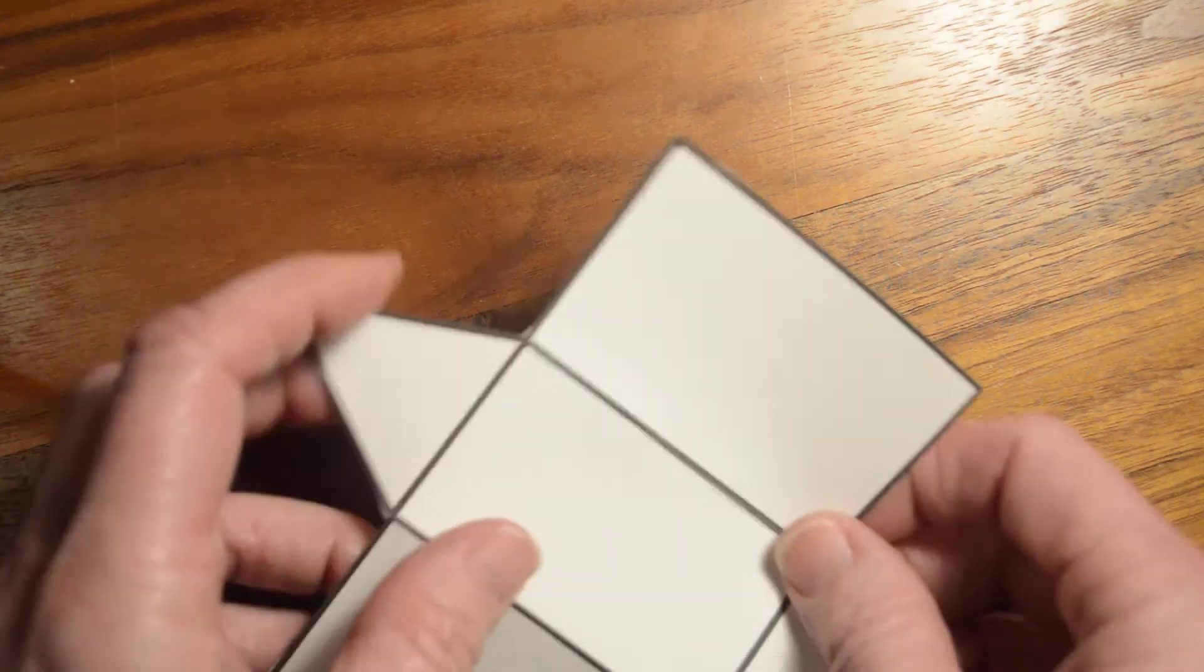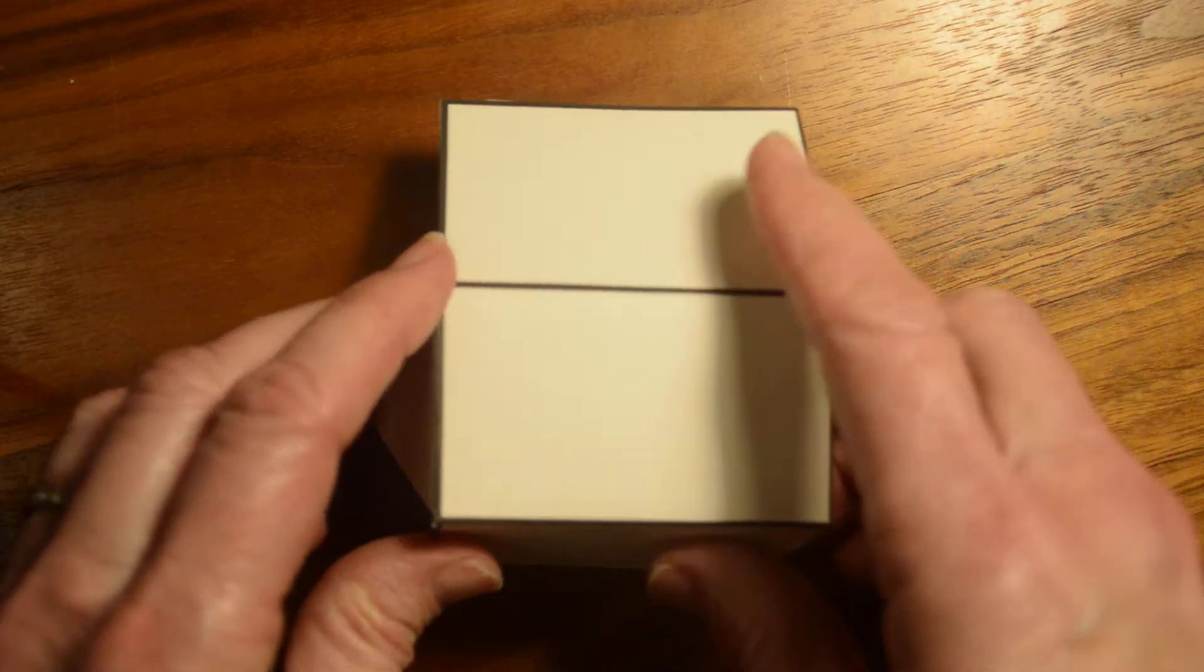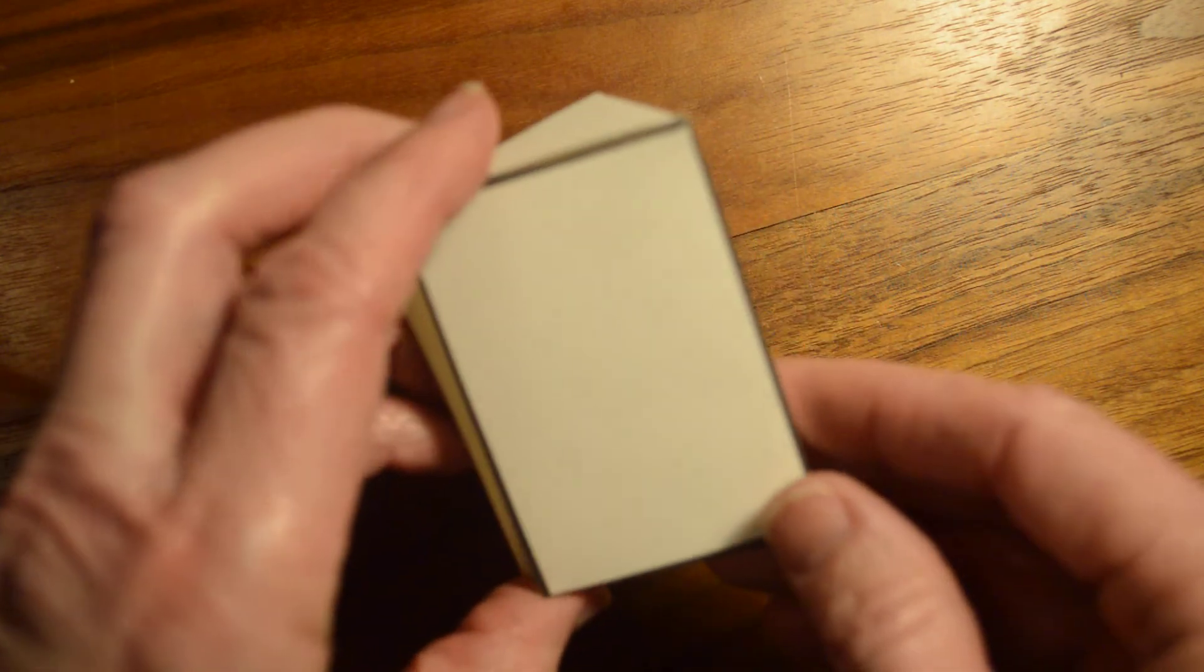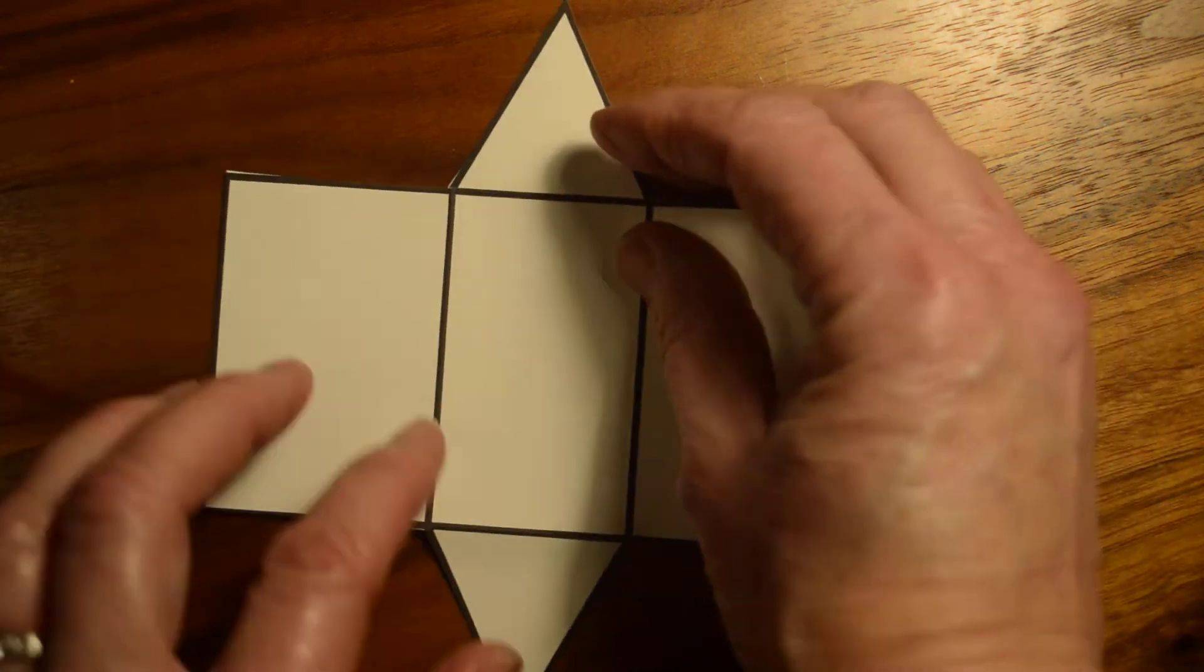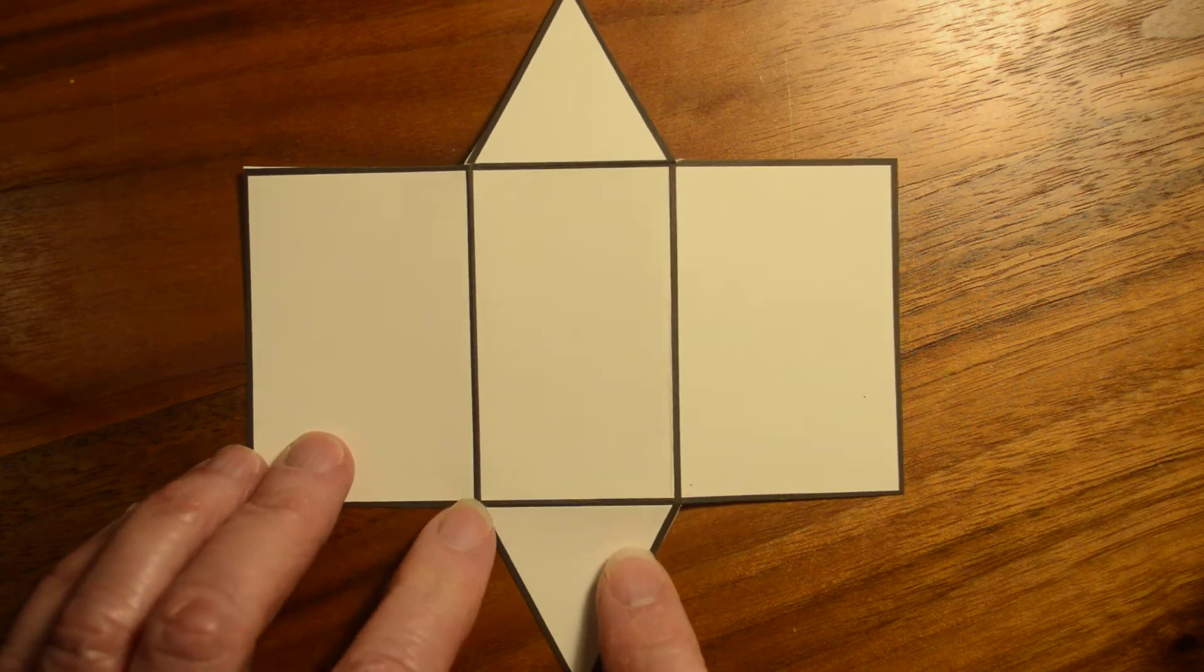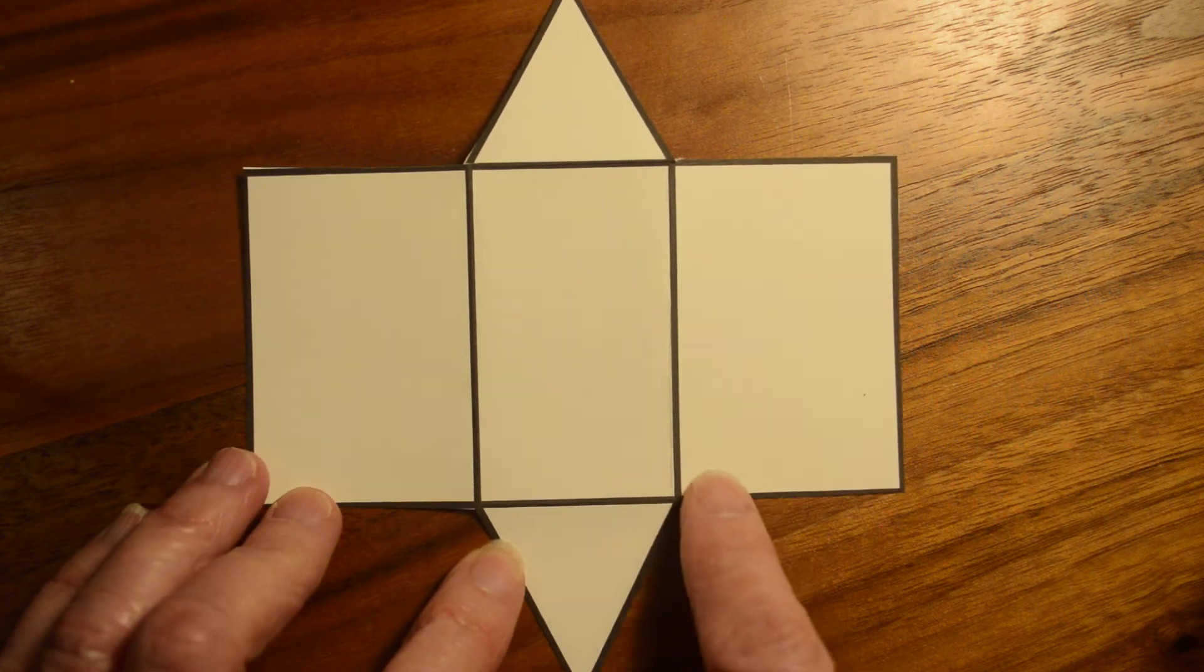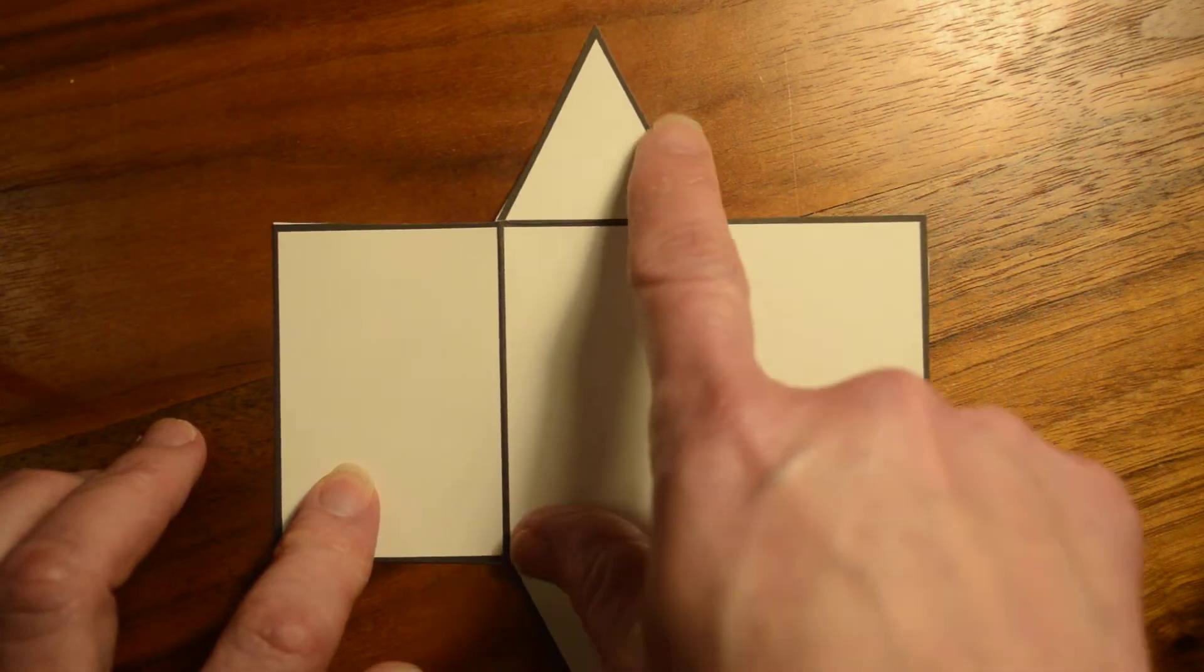Another one that we talked about is this kind of Toblerone shape, where when we fold that up, we end up getting a triangular prism. So two triangular bases that are identical that are parallel to each other. But what it consists of is, in this particular case, two identical equilateral triangles, a rectangle here, and then two other rectangles right here, which are not necessarily the same size as this. So I guess this can't be equilateral.